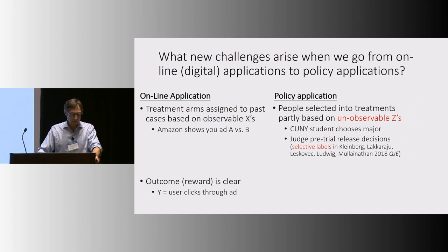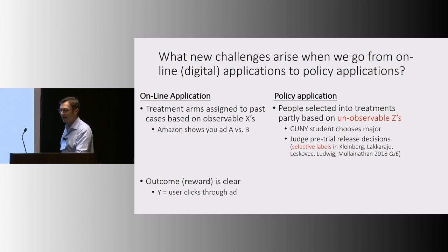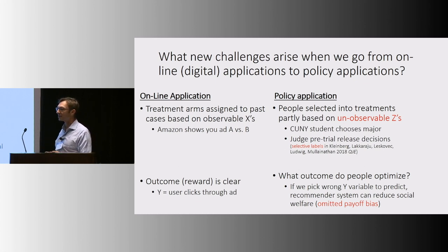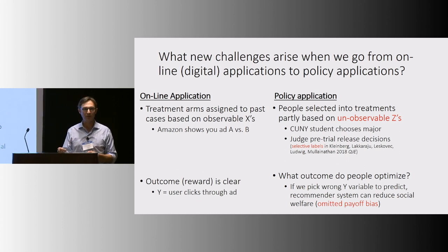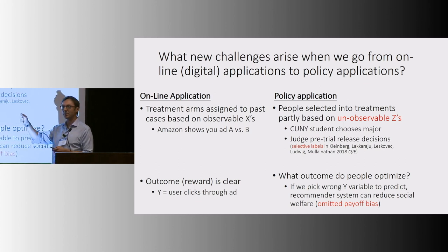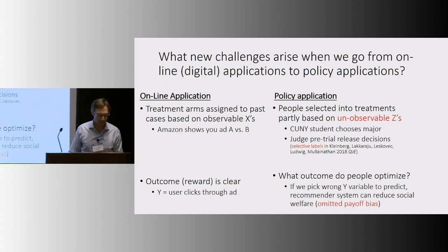Another issue when moving from the online environment to the real world: for Amazon or Facebook, the outcome in a contextual bandit is something straightforward, like whether the person clicks through the ad. But if you're building a recommender system for CUNY, what the hell is even the outcome? You can probably think of five very reasonable outcome measures. If you get the choice of outcome wrong, you can build a recommender system that actually ruins people's lives. We call this 'omitted payoff bias' — predicting one thing while a broader set of outcomes goes into the person's utility function — and economists are particularly well positioned to think about this.